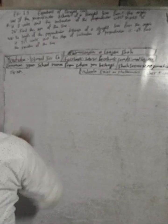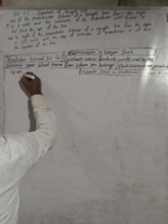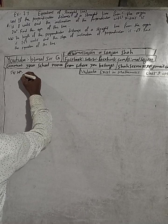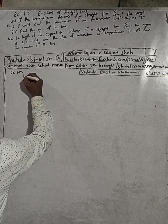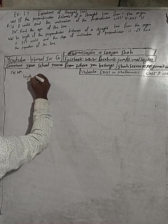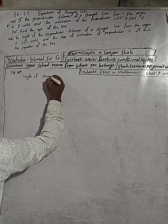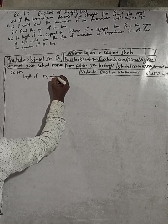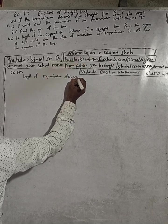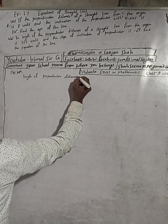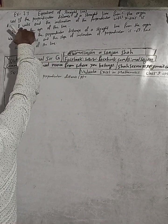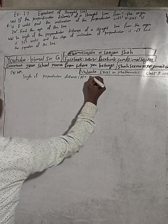So here, the length of perpendicular distance, indicated by P, is equal to 8 units.